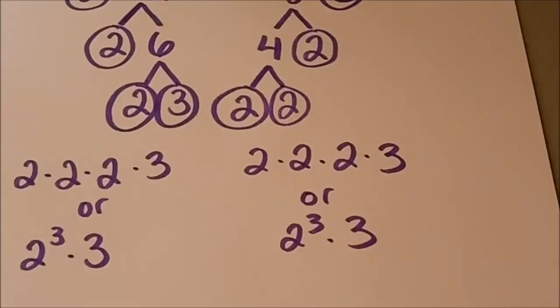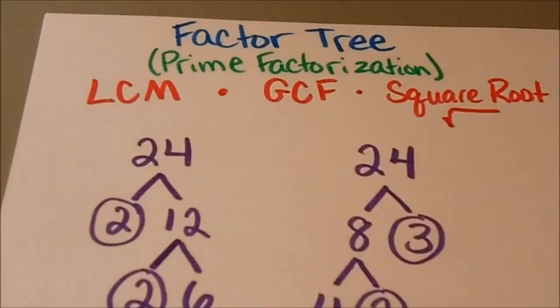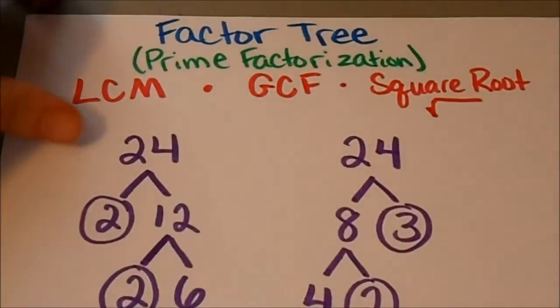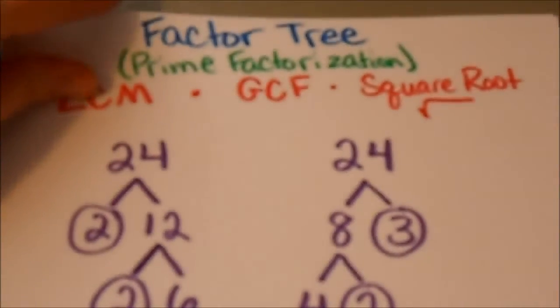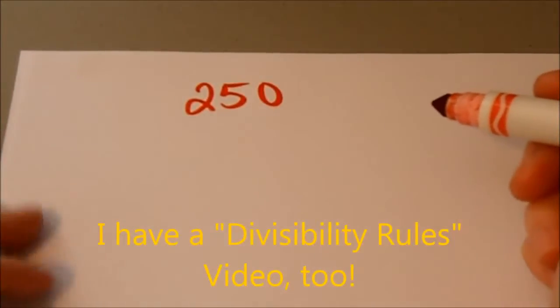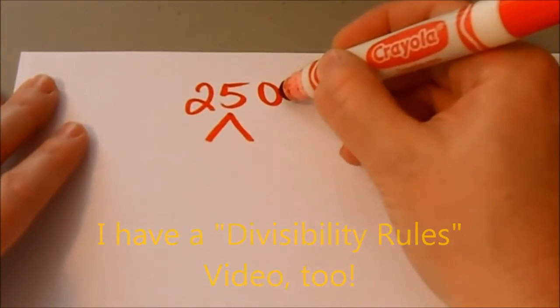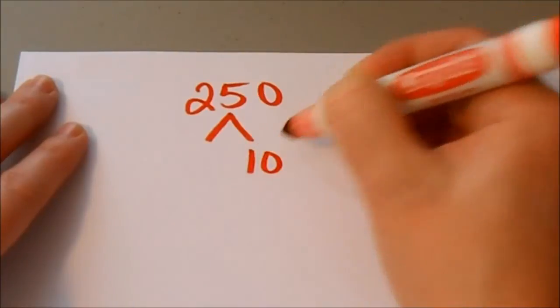That's a quick, easy explanation of factor trees when you're trying to find the prime factorization. Now I want to show you a bigger number so you can see how to factor larger numbers. Let's start with the number 250. If you know your divisibility rules, this number is really easy to put into prime factors. Because this number has a zero at the end, I know it's divisible by 10.